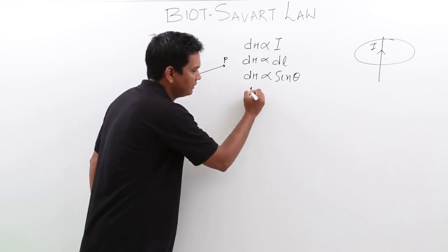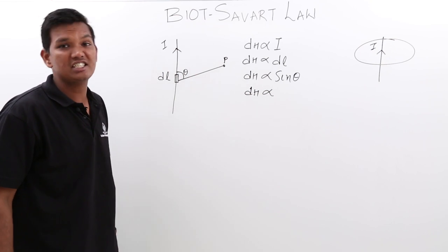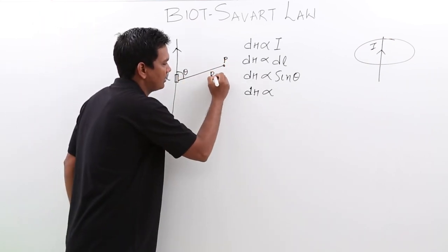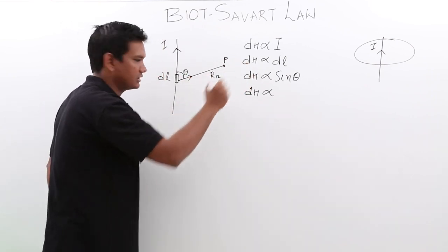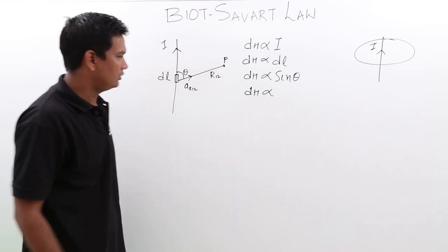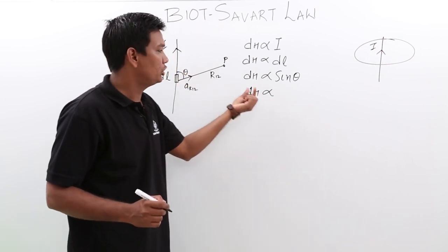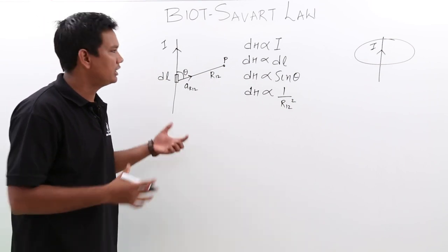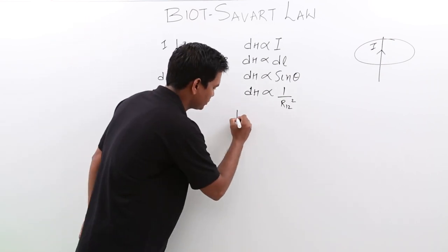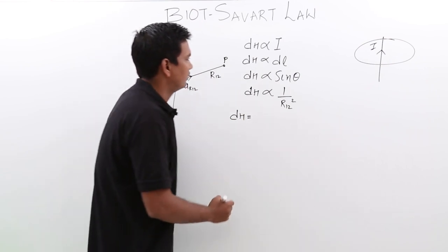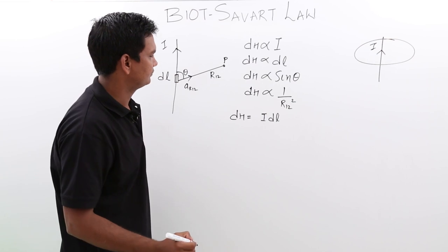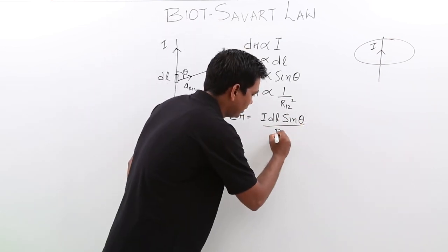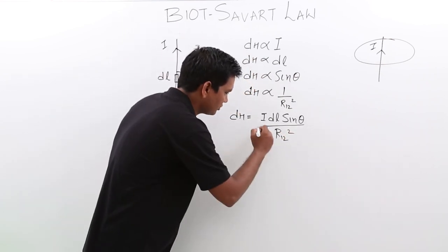He also said the magnetic field intensity is inversely proportional to the square of the distance between the length of the wire and the point. In this case, this distance is r12, and the unit vector connecting them is a_r12. So it is inversely proportional to r12 squared. Combining all of this with a proportionality constant of 1 by 4 pi, we can write the complete equation.